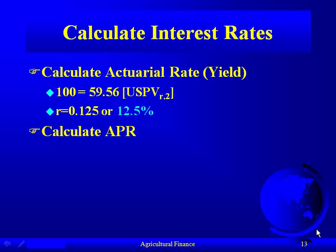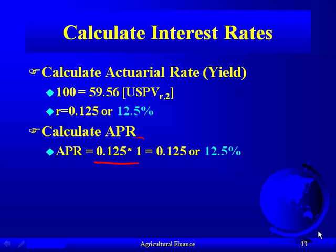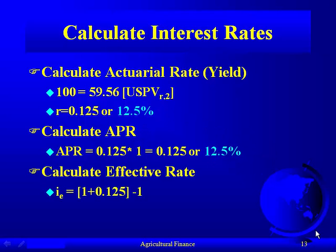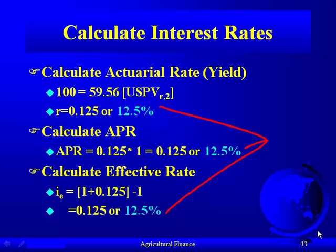To calculate the APR, we take the actuarial rate times the number of conversion periods. Since this is annual, the conversion period is one — so the actuarial rate and the APR are the same, which is always the case with annual payments. To calculate the effective rate, APR divided by one is still the APR, so it's one plus the APR minus one. For a fully amortized loan with annual payments, the actuarial rate, APR, contractual rate, and effective interest rate are all the same: 12.5%.